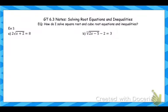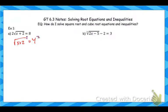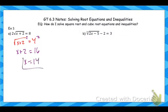Typically whenever we're solving, our goal is to get the square root by itself — that's the first thing we do. So this first one, we'll start by dividing by 2. Then our next step is to square both sides. Once the square root is by itself, we square both sides to get rid of that square root. We're left with x plus 2 equals 16, so x equals 14.